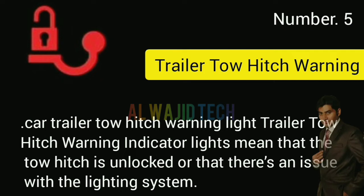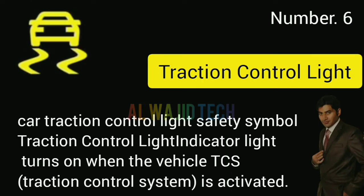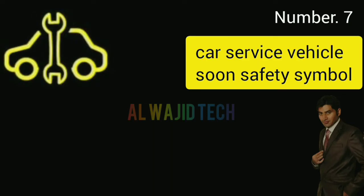Number five: Car trailer hitch warning light. The trailer hitch warning indicator means that the hitch is unlocked and that there is an issue with the lighting system. Number six: Car traction control light. The traction control light indicator turns on when the vehicle's TCS is activated.